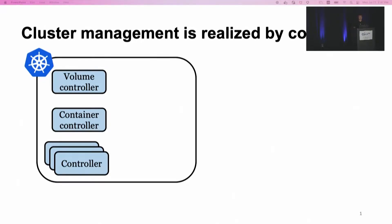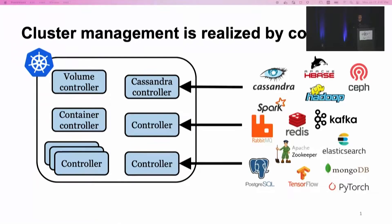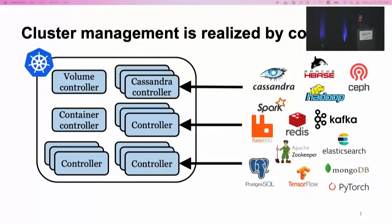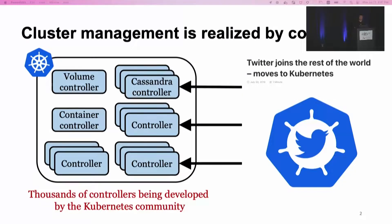For systems deployed on Kubernetes, they also need controllers to manage their operations. As a concrete example, to deploy Cassandra, we will need a Cassandra controller to manage it. And of course, we need controllers to manage all other deployed systems. Even for the same application, there are multiple controller implementations available for different deployment scenarios. Today, thousands of controllers are being developed by the Kubernetes community. If you are currently tweeting about OSDI, Twitter is probably also managed by some Kubernetes controller.